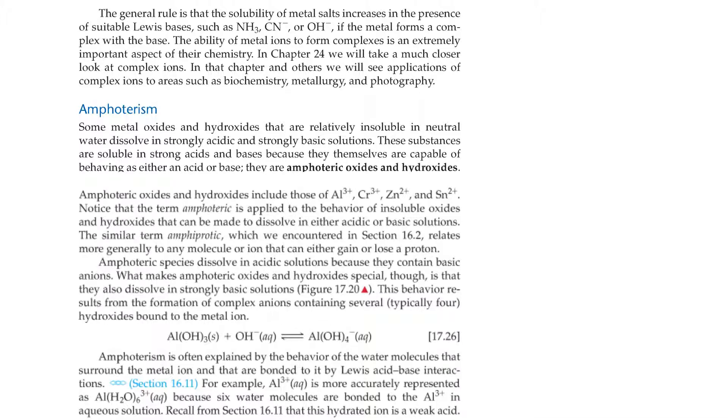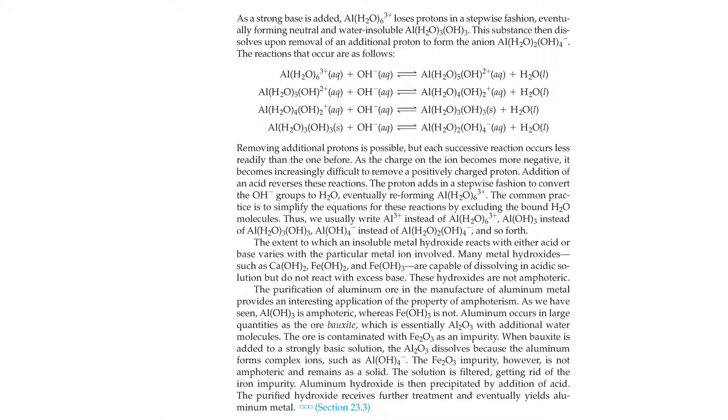Amphoterism is often explained by the behavior of the water molecules that surround the metal ion, bonded to it by Lewis acid-base interactions. For example, aluminum cation is more accurately represented as a complex ion of water and aluminum because six water molecules are bonded to the aluminum cation in aqueous solution: Al(H2O)6³⁺. Recall from Section 16.11 that this hydrated ion is a weak acid.